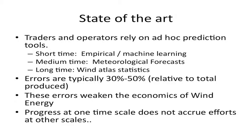What's typically done now is traders and operators have a set of ad hoc prediction tools. At the shortest time scales they're all data driven — machine learning, learning empirical rules from data. At medium time scales they use meteorological forecast models, and at the long time scale they're again data driven from wind atlases. Errors — measured not based on generator capacity but as a fraction of energy actually produced — are about 30 to 50 percent. So there's a lot of room for improvement.